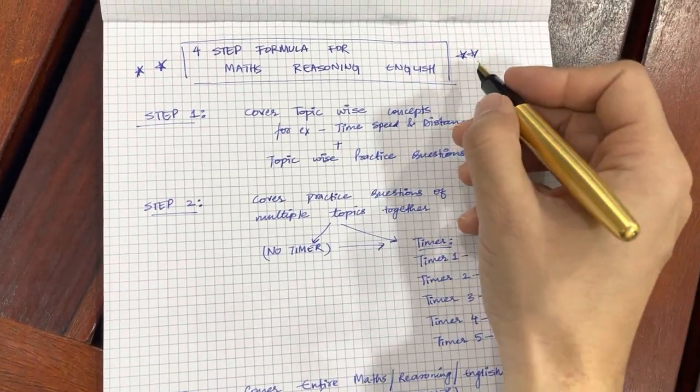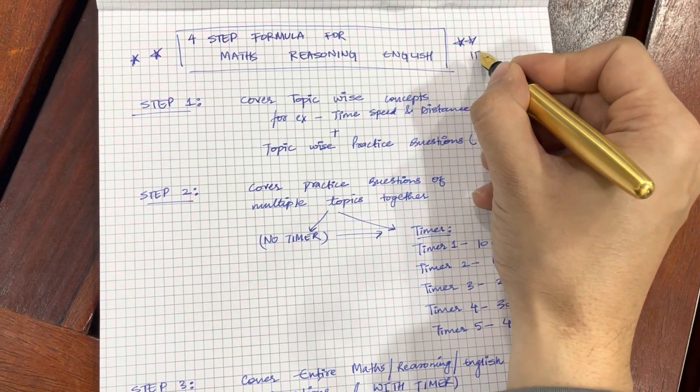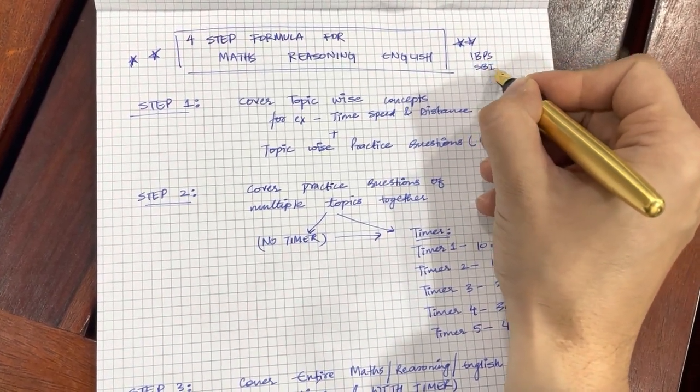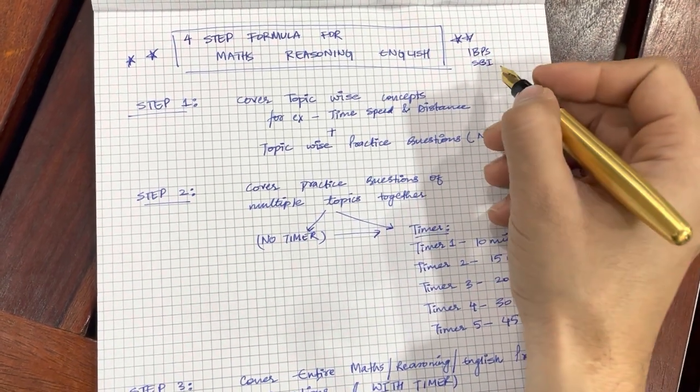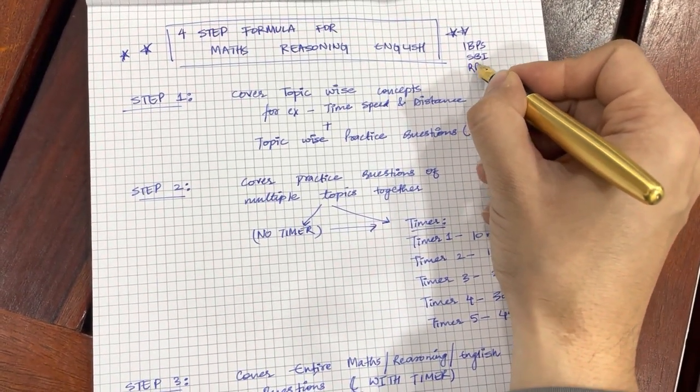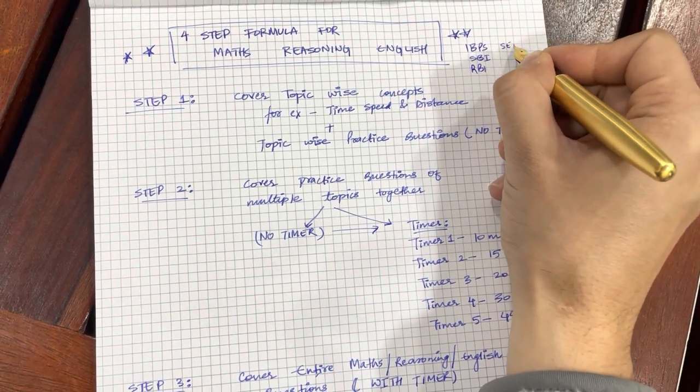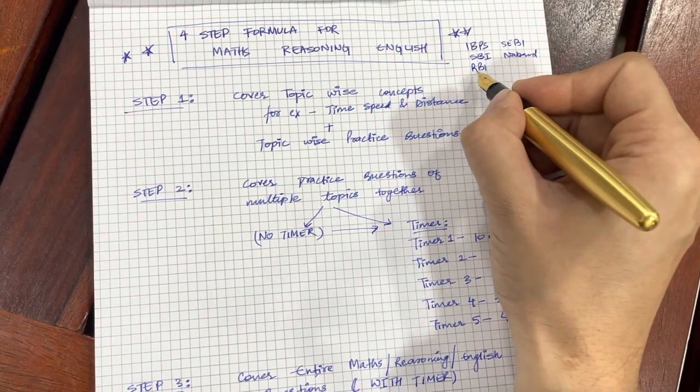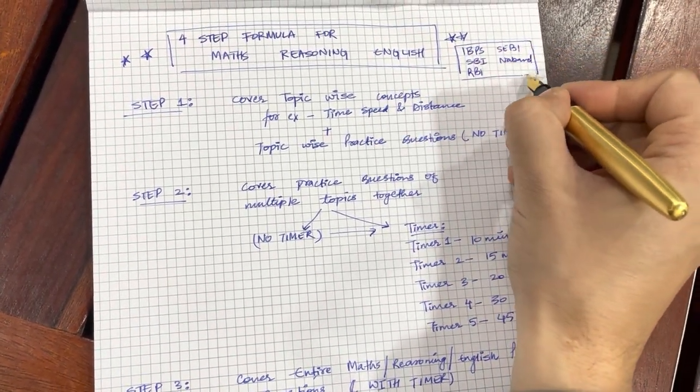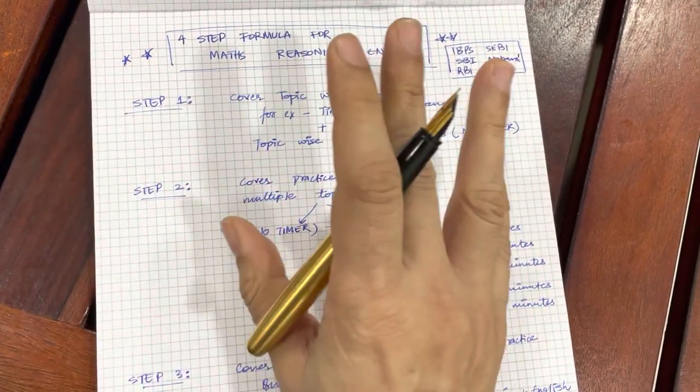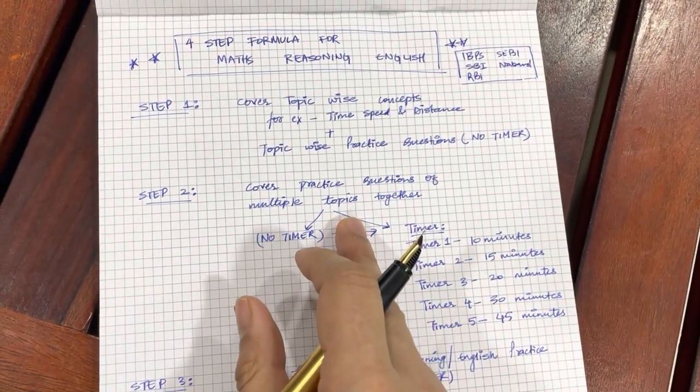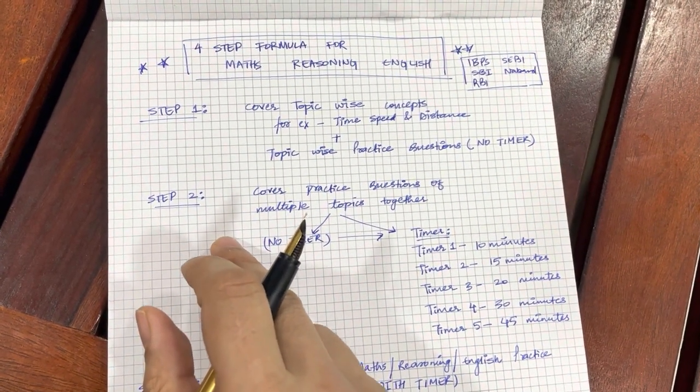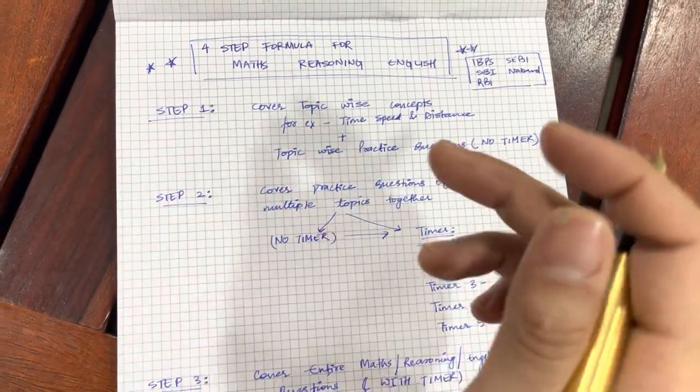Before starting with step one, I would like to specify that this four step formula is going to be useful for IBPS, for SBI, for RBI, for SEBI, for NABARD and various other examinations in which you have Quant, Reasoning and English. It does not matter what the level of the examination is, the formula stays the same, the steps stay the same. Let us start with step one.